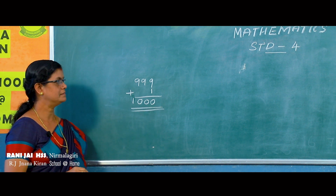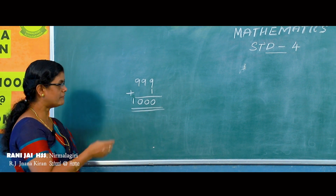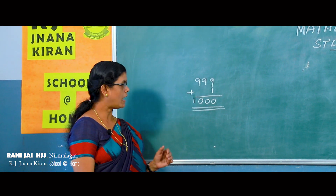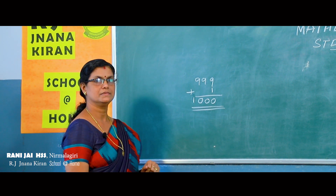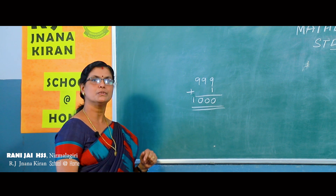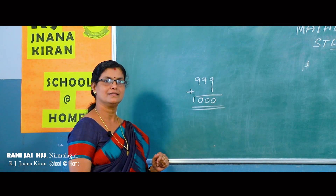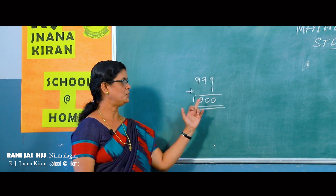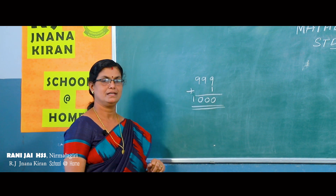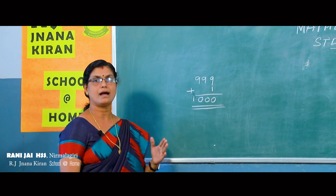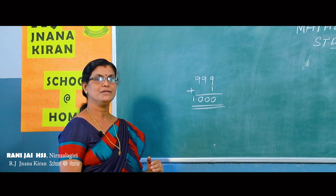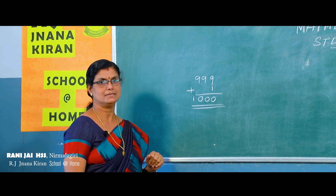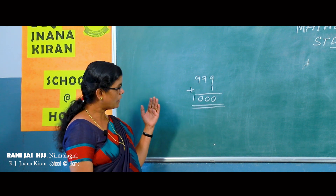Can you see this number? When we added one to the largest three-digit number, you have got a number here. How many digits are there? You count — one, two, three and four. When we added one to the largest three-digit number, you have got a four-digit number.